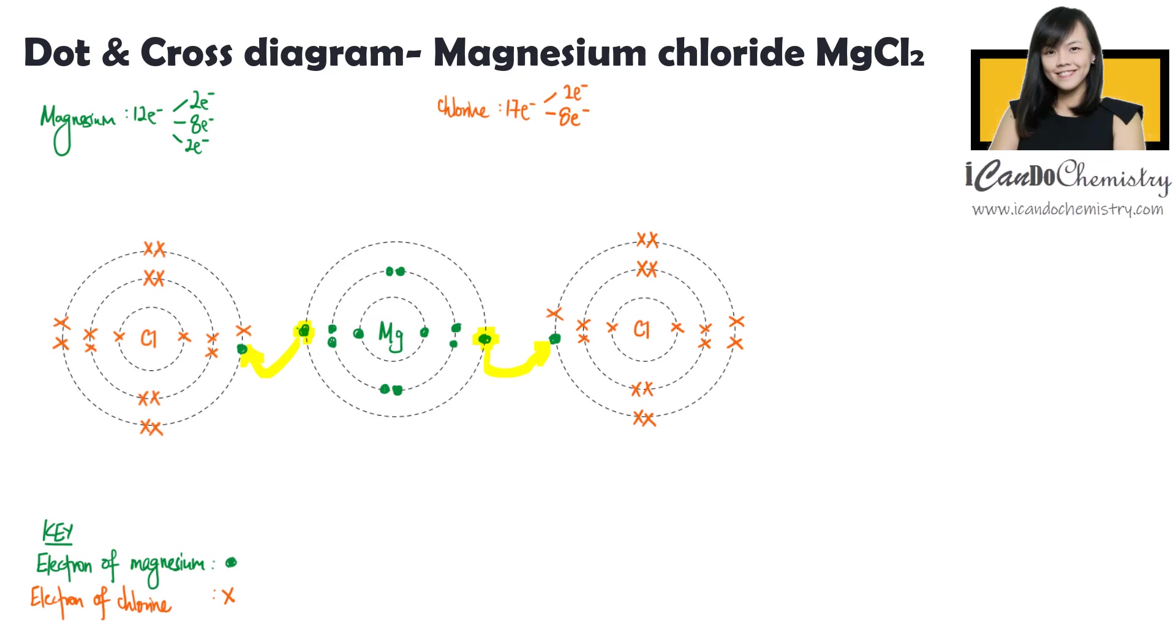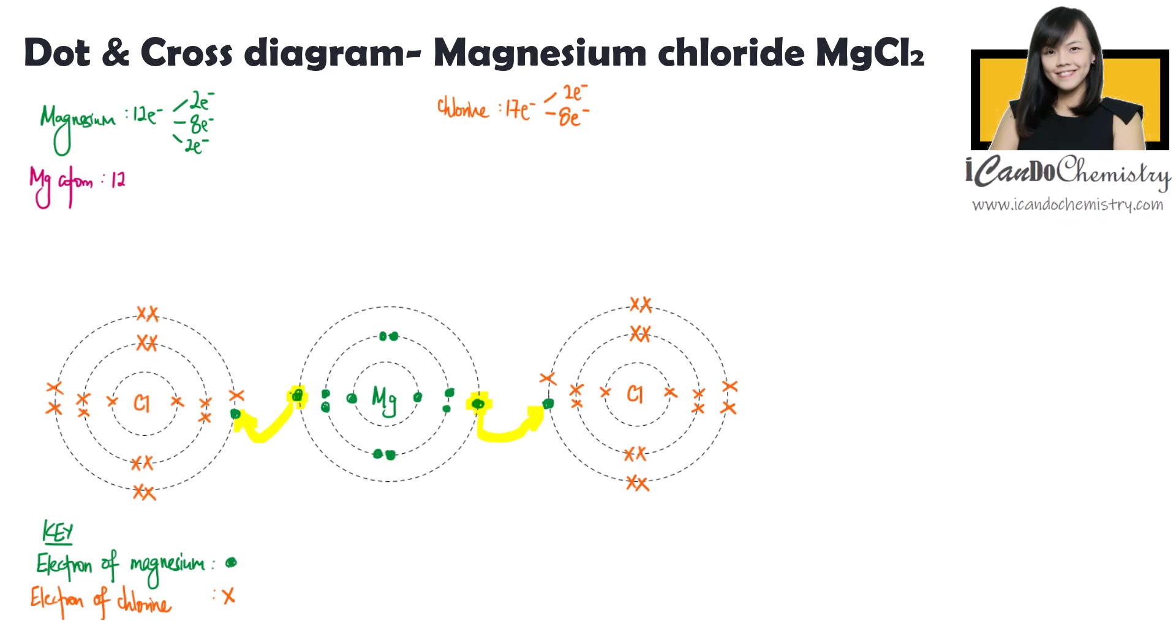Let's work out the charges of the ions. Magnesium has 12 protons, which gives it a charge of +12, and 12 electrons, which gives it a charge of -12. Hence the overall charge of this atom is zero.